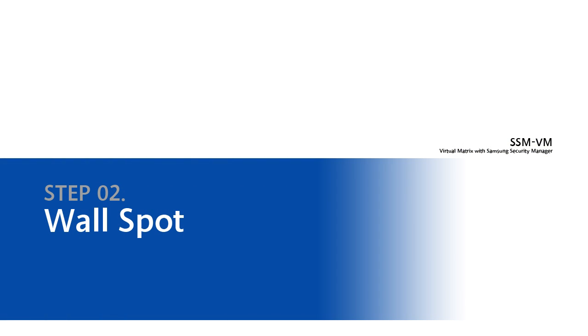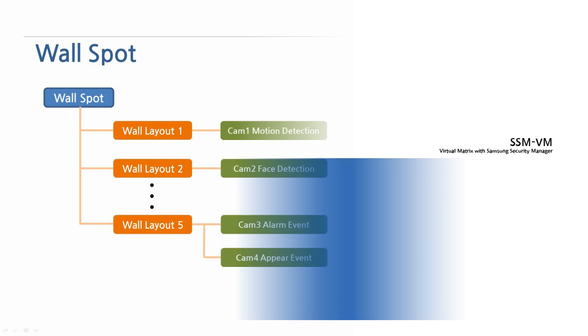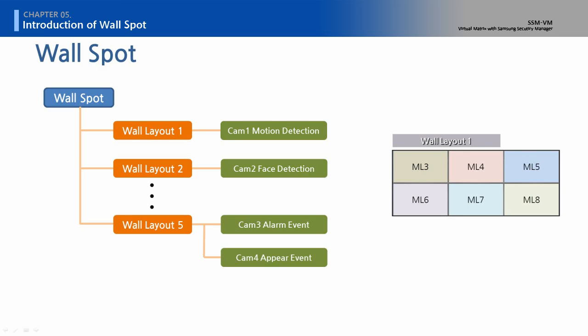Step 2: Wall Spot. In the event of an event on a certain camera, it displays the wall layout that the camera is contained in.